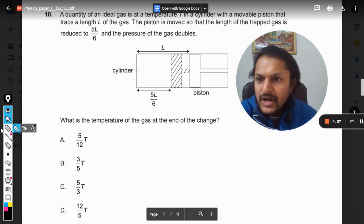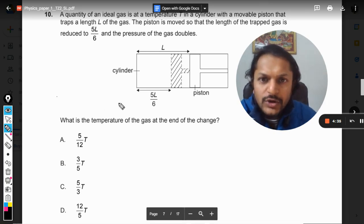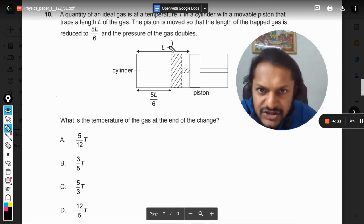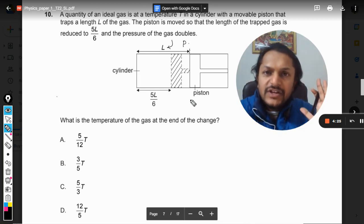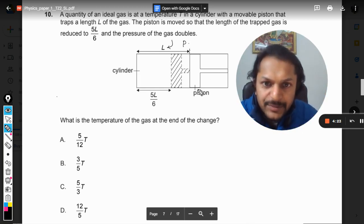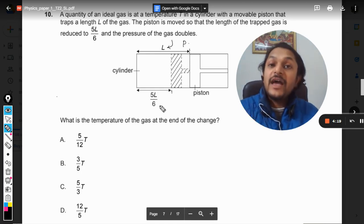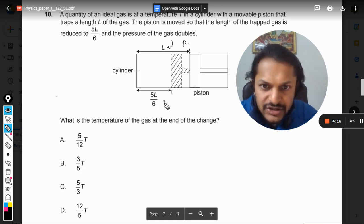So what is given in the question? This is the initial position of the piston and the pressure here is taken as P. Now what happens is we just compress this thing and the piston moves ahead. Now the length has become 5L by 6 and the pressure now is 2P.